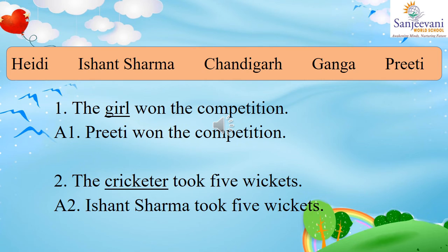Second statement: 'The cricketer took 5 wickets.' The underlined common noun is 'cricketer.' As we all know, Ishanth Sharma is a very famous bowler in cricket, so we replace 'cricketer' with Ishanth Sharma. The answer is: Ishanth Sharma took 5 wickets. Write this just below statement number 2.